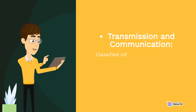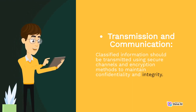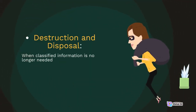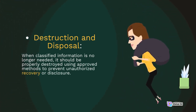Transmission and Communication: Classified information should be transmitted using secure channels and encryption methods to maintain confidentiality and integrity. Destruction and Disposal: When classified information is no longer needed, it should be properly destroyed using approved methods to prevent unauthorized recovery or disclosure.